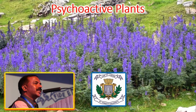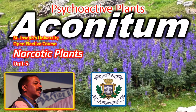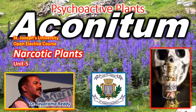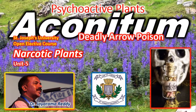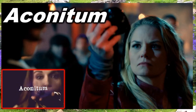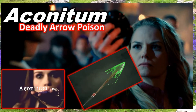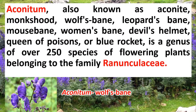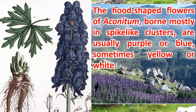In fact, some of them have been used as arrow poison for thousands of years. Aconitum is also known as Aconite, Monkshood, Women's Bane, Devil's Helmet, and Queen of Poisons, among others. It is a genus of over 250 species of flowering plants belonging to the family Ranunculaceae.